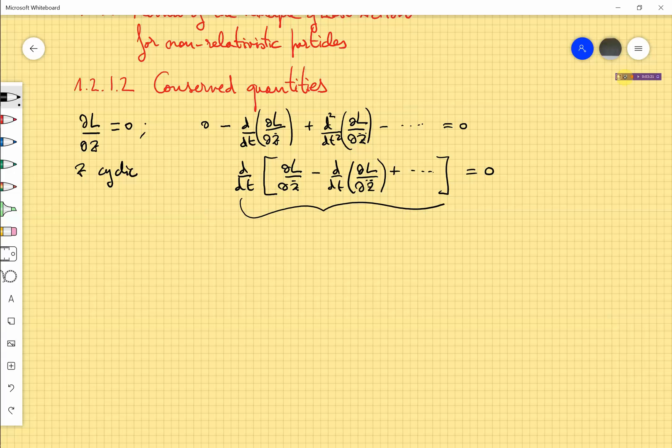In the simplest case, when L only depends on x, x dot and t, it could be the momentum canonically conjugated to t, and this is the conservation law.